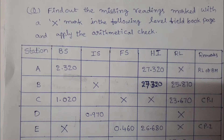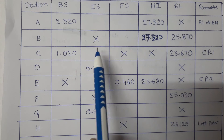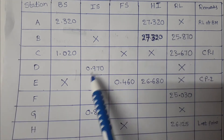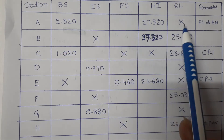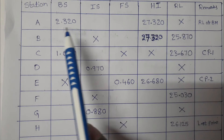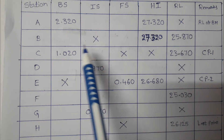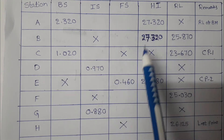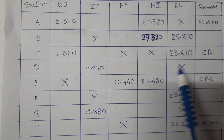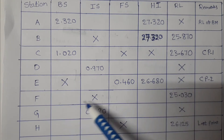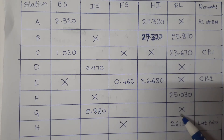To find out the missing readings marked with a cross mark in the following level field book page and apply the arithmetical check. It is the level field book where some of the values are missing. We have to find all these values using the height of instrument method.